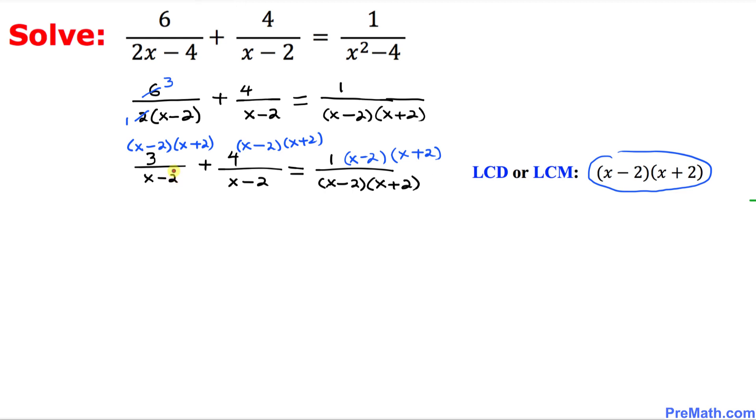And as you can see, this x minus 2 and this x minus 2 is gone. So we are simply left with 3 times x plus 2 plus... And now as you can see, this x minus 2 is gone with this x minus 2. So we got 4 times x plus 2. On the right hand side, we can see that this x minus 2 is gone with this x minus 2. This x plus 2 is gone with this x plus 2. So we are just left with 1.